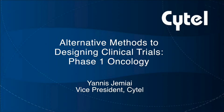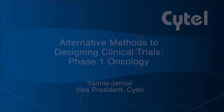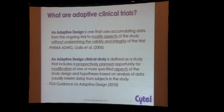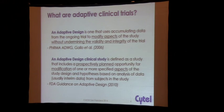I'm going to go through a few slides to explain more generally what adaptive designs are. There have been a few definitions provided over the years. The first one by the Pharma Adaptive Design Working Group — basically a number of pharmaceutical companies coming together to define what adaptive trials were — in order to influence the FDA guidance on adaptive design. That first definition was: adaptive design is a design that uses accumulating data from an ongoing trial to modify aspects of the study without undermining the validity and integrity of the trial.